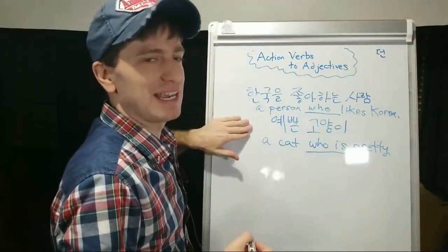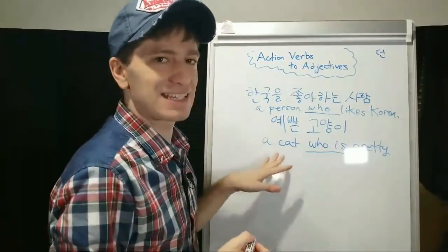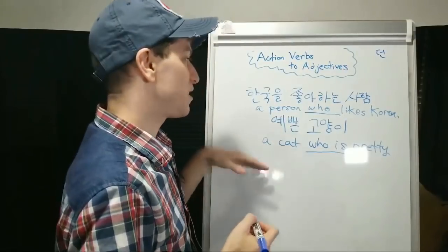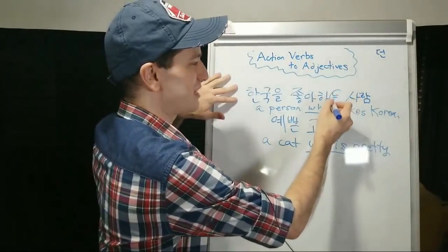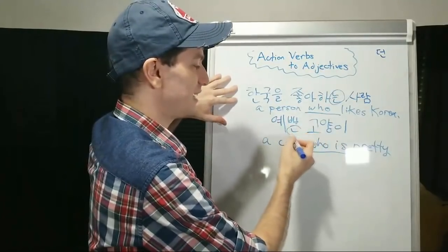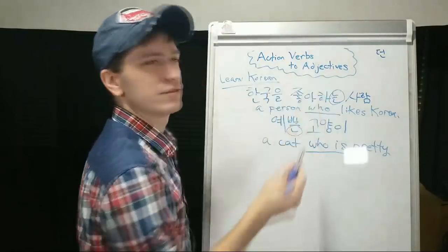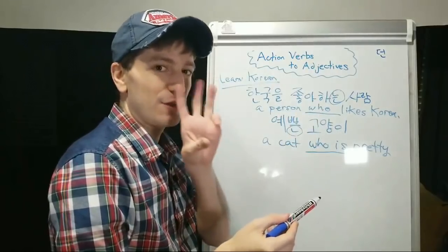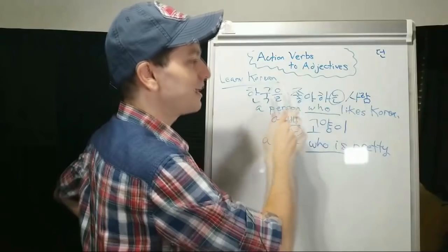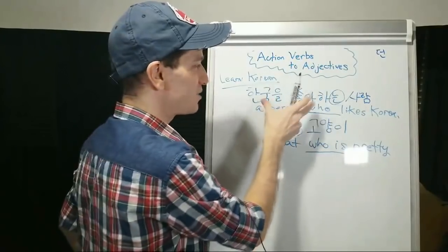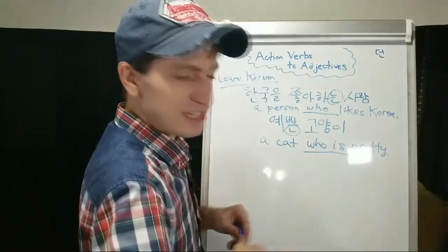What you're doing when you conjugate a descriptive verb to an adjective is this exact same concept. But when you do this with action verbs, you have to add a different ending. Here you can see it's 는, and here you can see it's just 니은. You don't have to memorize many rules to conjugate action verbs to adjectives — there are only three, and they're all very simple. You can also think of this the other way, like an adjective: a Korea-liking person.